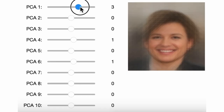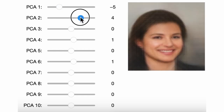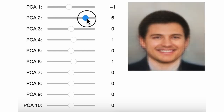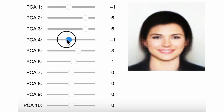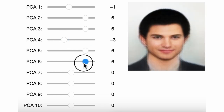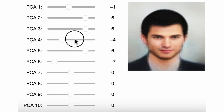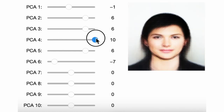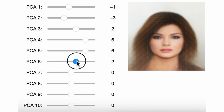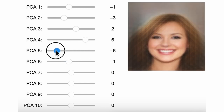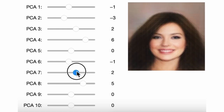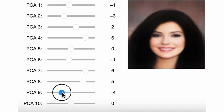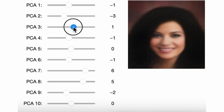For example, the first component seems to capture which direction the person is facing, and the second component captures whether it's male or female. Another one captures if they are smiling or not. This basically tells us about our dataset — what kind of variations dominate the original data the model was trained on. Just by visualizing the principal components extracted from the latent space, we can answer many demographic questions like which race, age, and genders dominate our dataset, without manually looking at individual images one by one and without having access to any annotations.